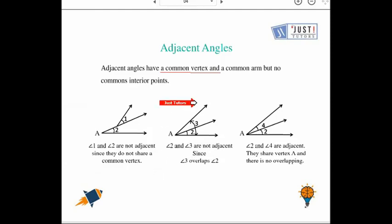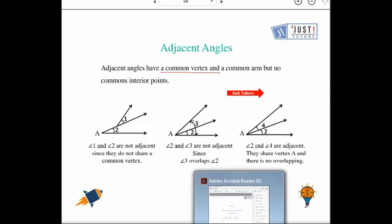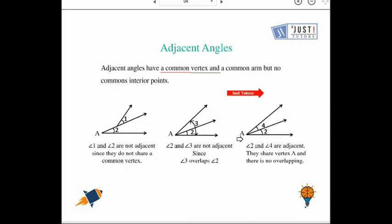Let's talk about the second shape. If we look at the second shape, then we have a common vertex A, a common arm, but there is a common interior point. So we can say that angle 2 and angle 4 are adjacent angles.